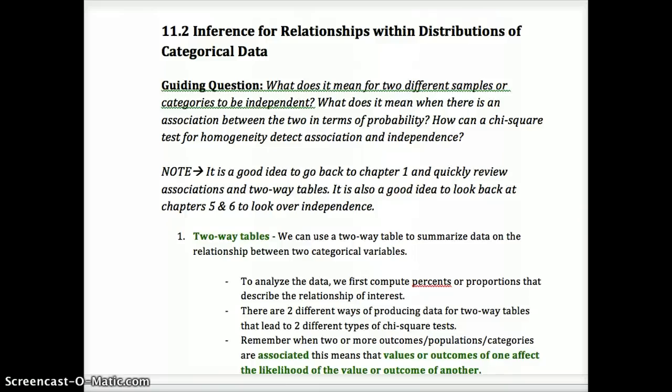This is our video for AP Stats Chapter 11, Lesson 2. We're looking at categorical data and another kind of chi-square distribution. Think back to Chapter 1 where we looked at conditional distributions on two-way tables, and also Chapters 5 and 6 on probability and what it meant for different samples to be independent. One outcome should not affect another.